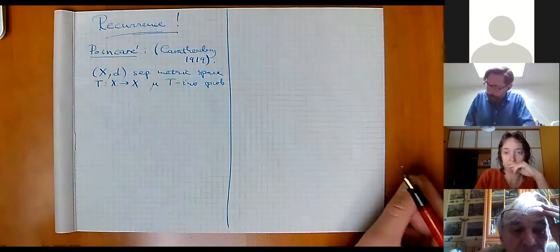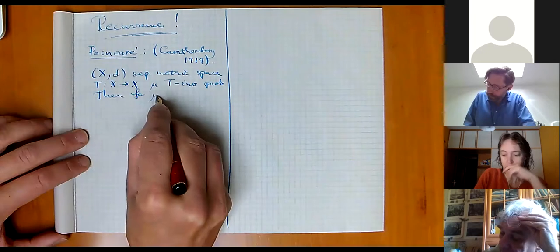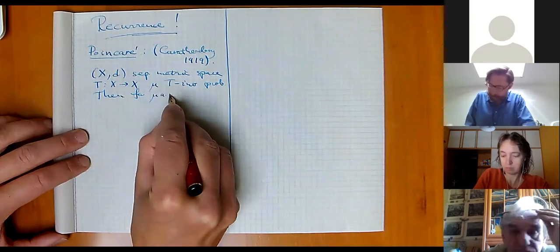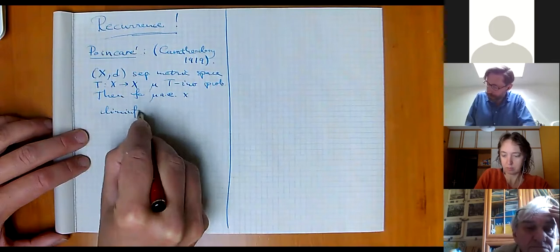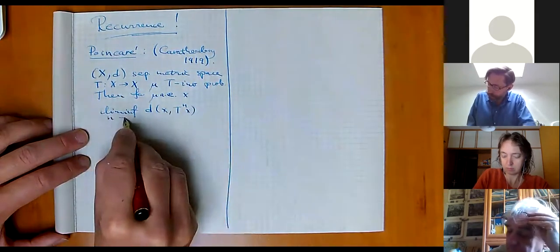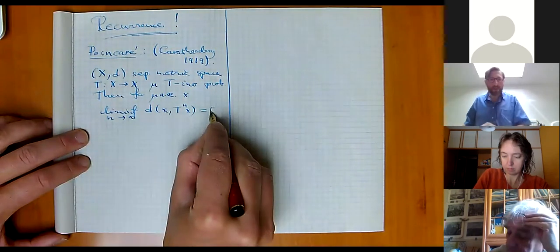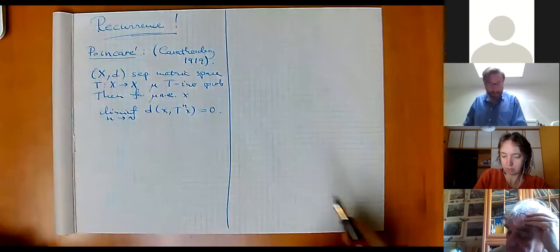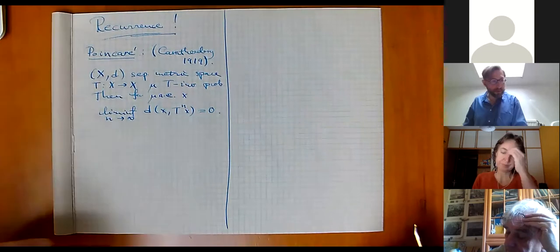It's not important that it's a probability measure, but it should be a finite measure. Then the result is that for mu-almost every point x, if we look at the distance between a point and its nth iterate, then the lim-inf of this goes to zero. So the distance becomes as small as you like if you just iterate many times.